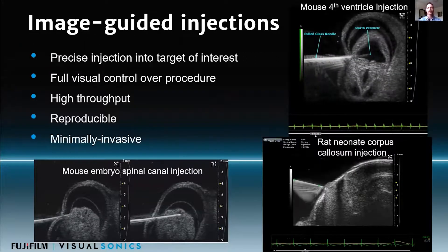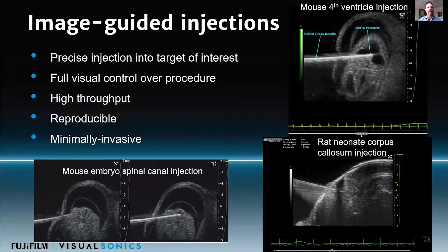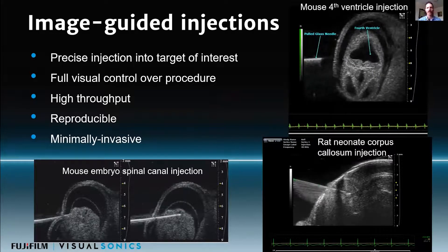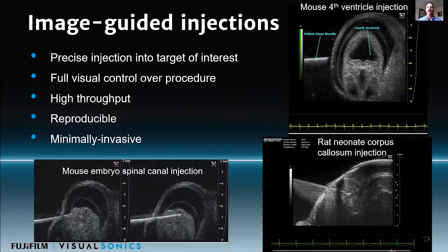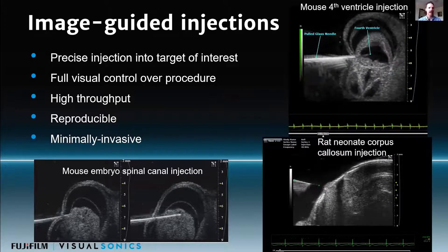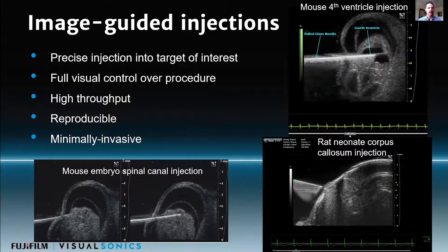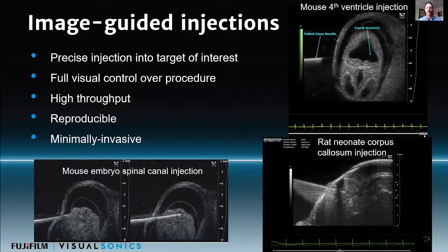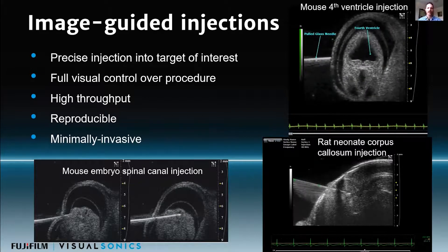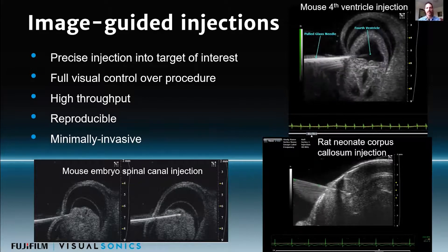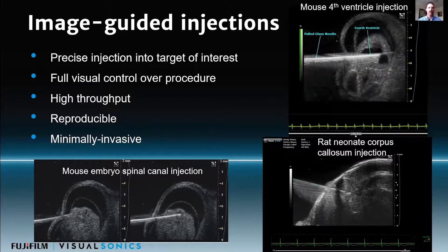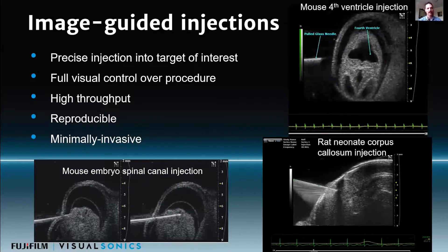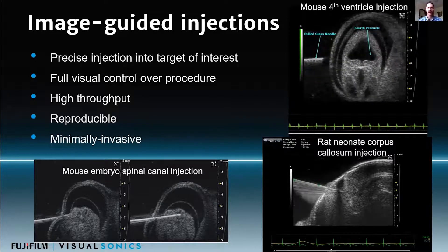With plain B-mode ultrasound, image-guided injections are a big application — being able to do injections into mouse embryos, for example into the fourth ventricle of the brain, and also spinal canal injections. The bottom right image shows a pulled glass capillary needle going into the corpus callosum of a rat neonate. Ultrasound is great for this because of its real-time and high-resolution nature.